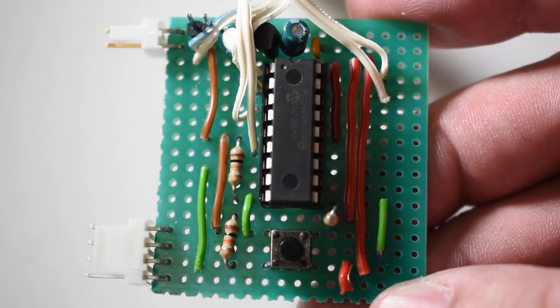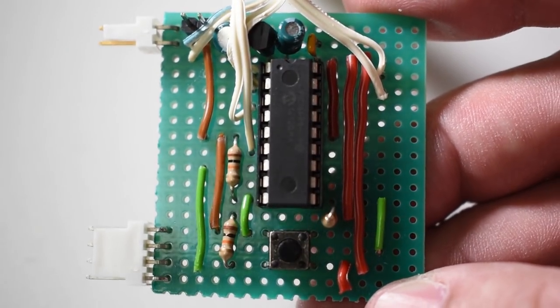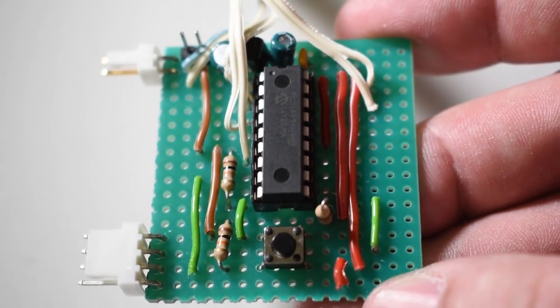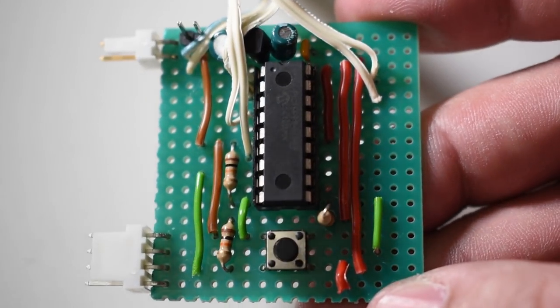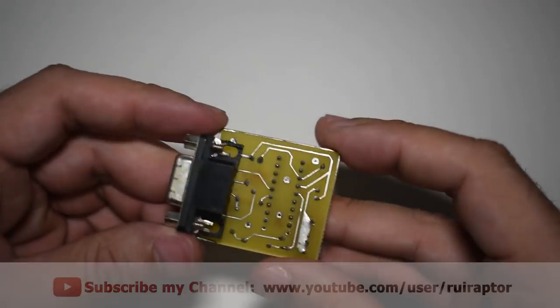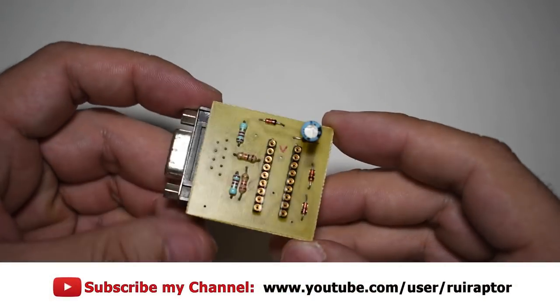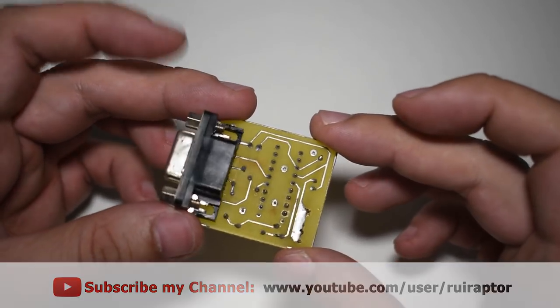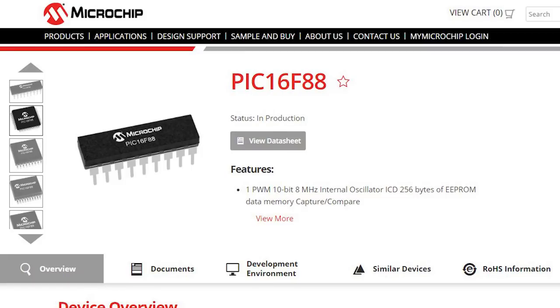The project uses just a few components. The main one is a 16F88 microcontroller from Microchip. For the guys that don't have a programmer to flash the hex file into the microcontroller, you can easily make a cheap and easy to build JDM programmer. Other alternative is to buy the microcontroller from Microchip already programmed.